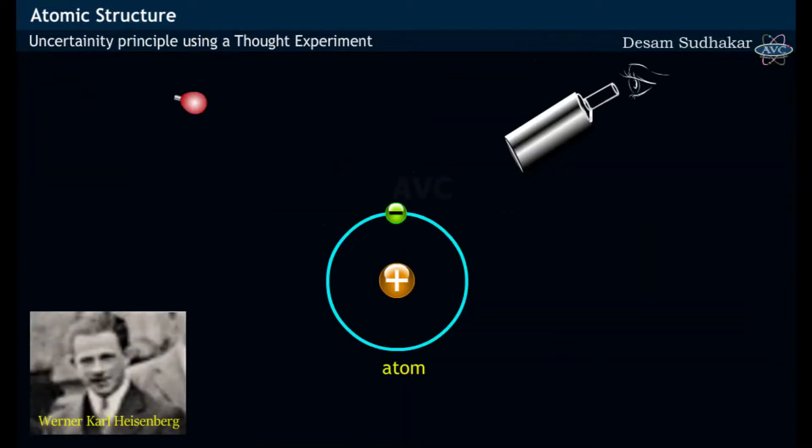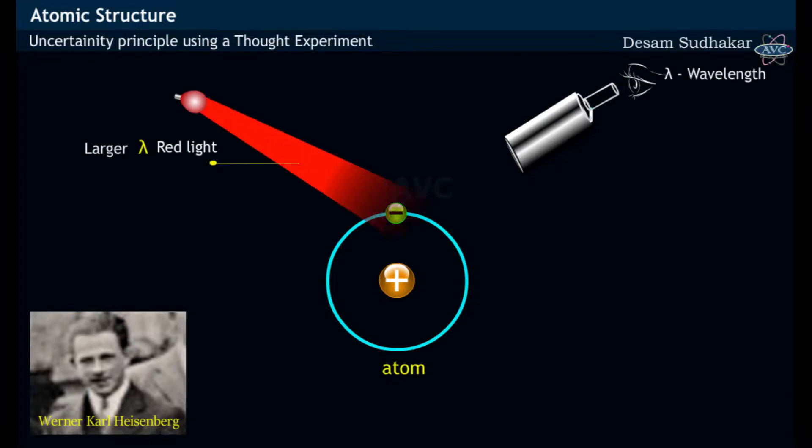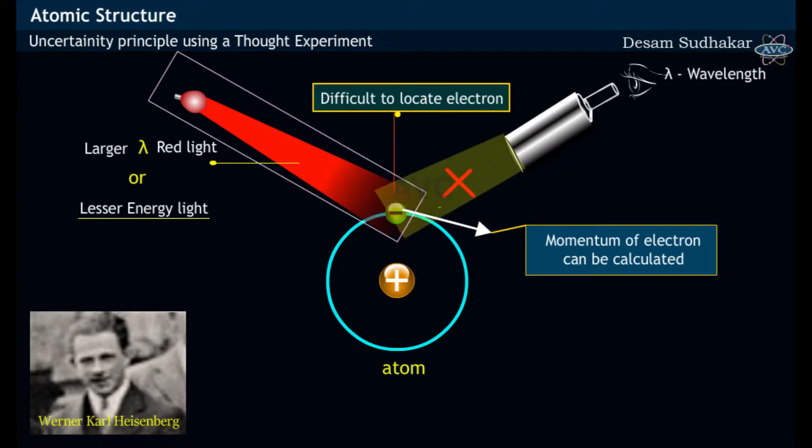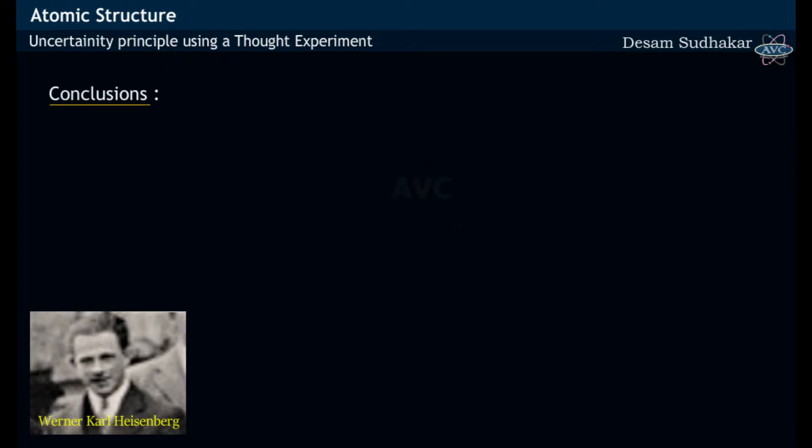In a similar fashion, larger wavelength light having lesser energy would allow us to measure the momentum of an electron, but using this larger wavelength light having low energy, we may not be able to locate the position of electron. From this thought experiment,